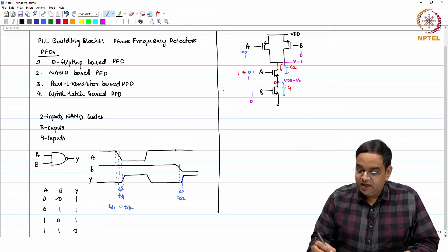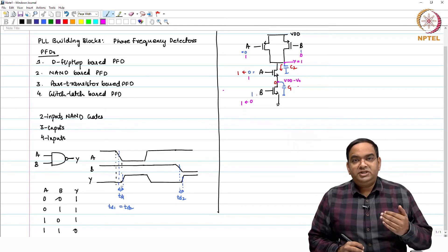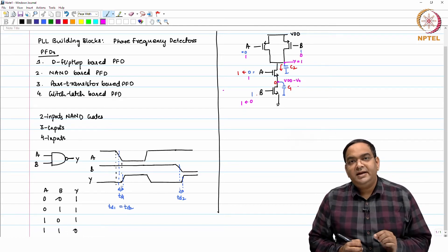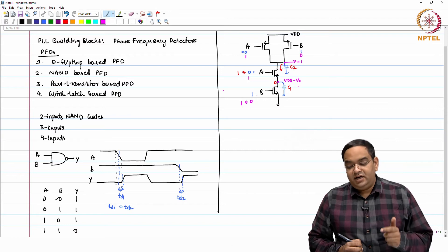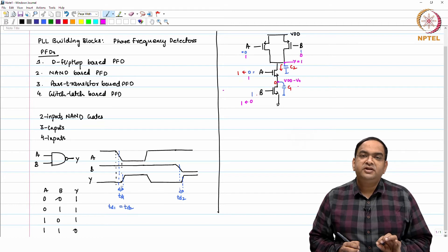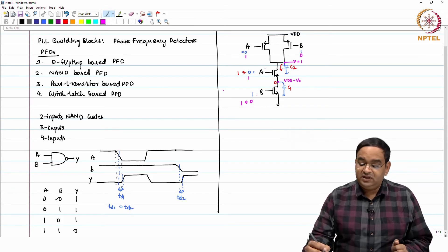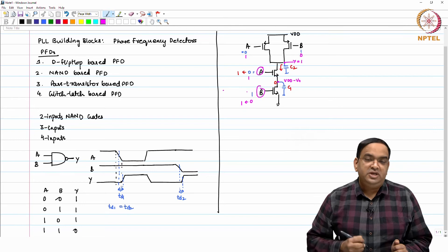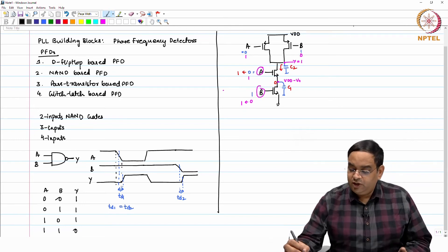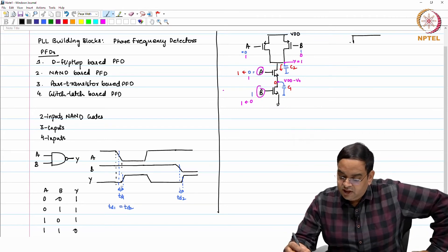When B goes from 0 to 1, you discharge this particular node from VDD minus VT to 0. The kind of charging and discharging which is happening in the NAND gate depends on whether A is triggering the change in the output or B is triggering the change in the output. This will make the input transition to output transition delay dependent on the signals A and B, which is not desirable.